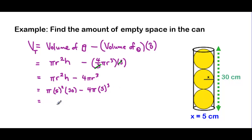Well, 5² is 25. 25 times 30 is 750. So this is 750 multiplied by π.